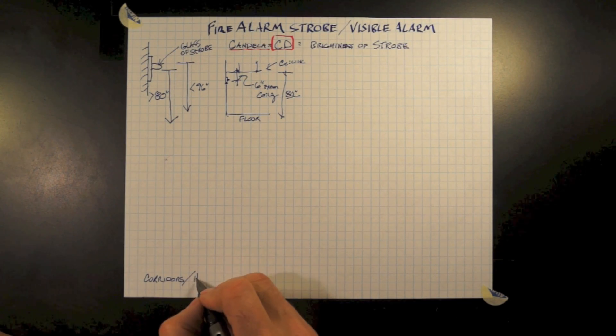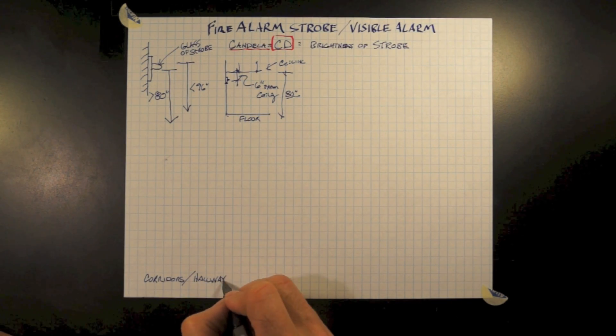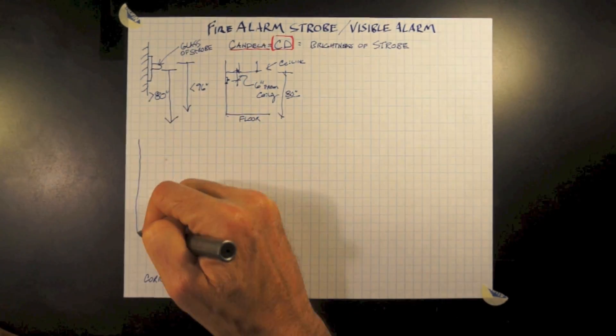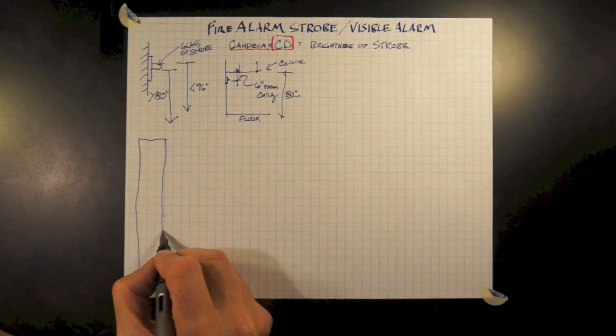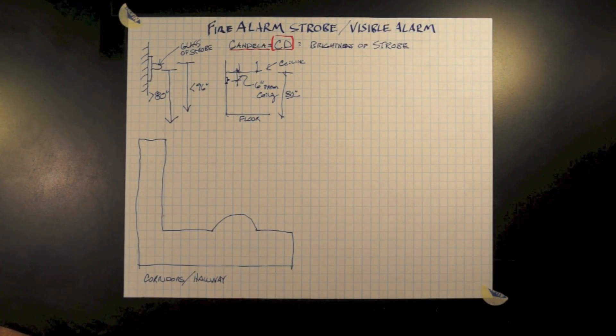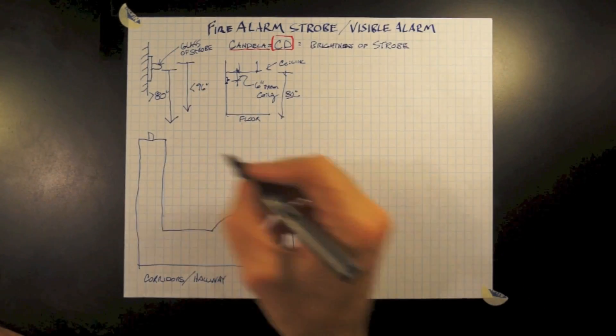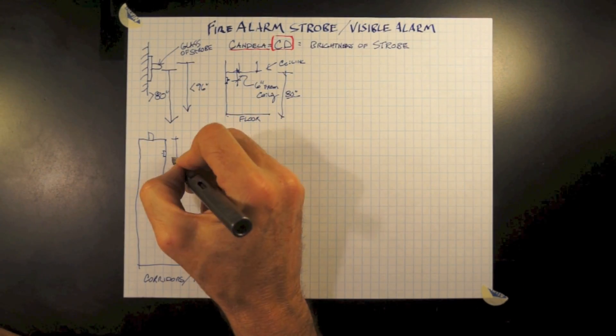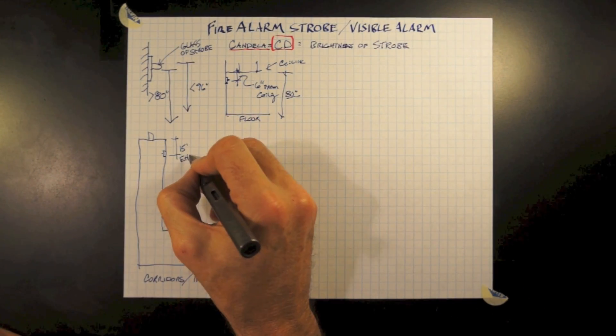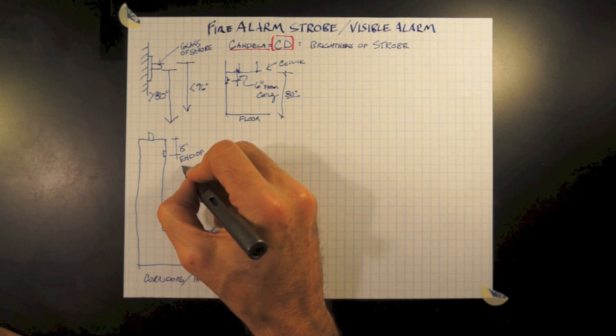Let's start off by looking at a corridor slash hallway. All strobes, regardless of the size or the number of candela, a strobe must be within 15 feet of the end of any hallway or end of any corridor, even if it is an exit.